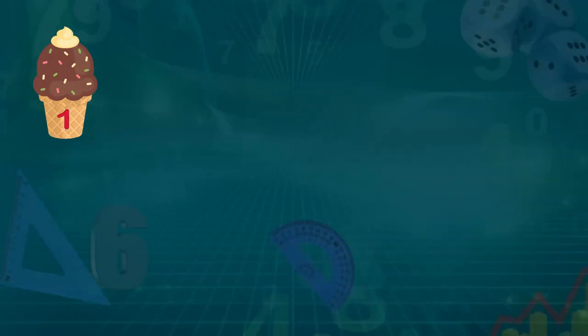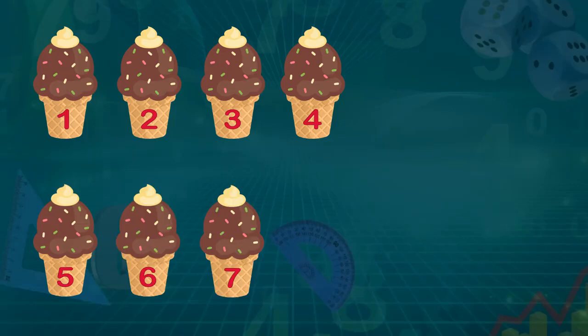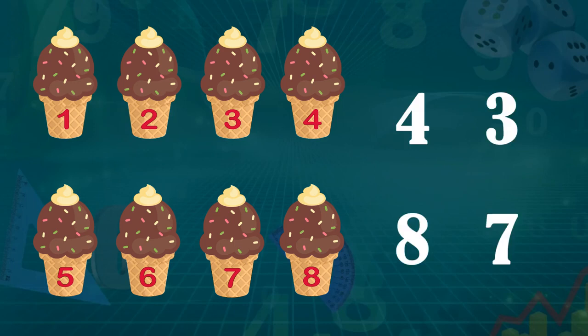Now let us see how many ice creams are there on the screen. 1, 2, 3, 4, 5, 6, 7 and 8. Options are 4, 3, 8, 7. So, we will circle the number 8.